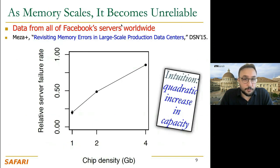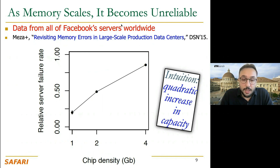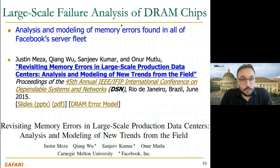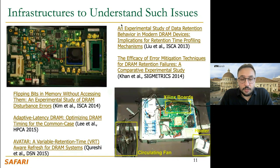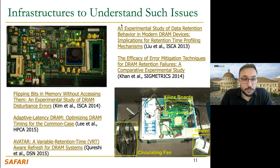Data from all Facebook servers worldwide, presented at DSM 2015, shows that as DRAM chip density increases, the relative server failure rate also increases significantly. You can find the analysis and model of memory errors found in all Facebook server failures in that paper. To avoid such issues and achieve safe, secure, and reliable operation, we need to understand such issues, and for that we need infrastructures.